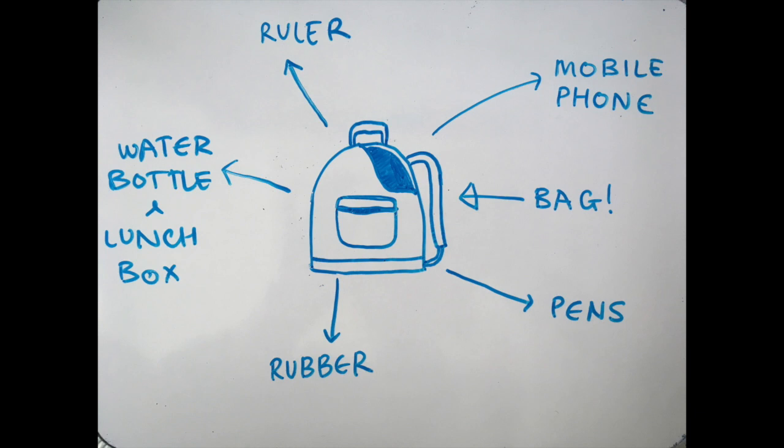For instance, in a student's backpack there will be various objects made of polymers such as ruler, mobile phone, pens, rubbers, water bottle, lunchbox, and quite possibly the bag itself.